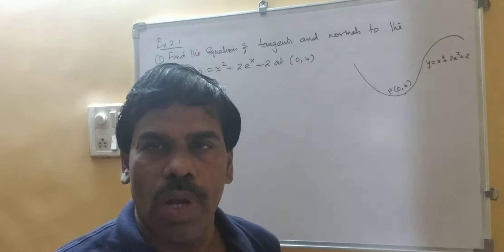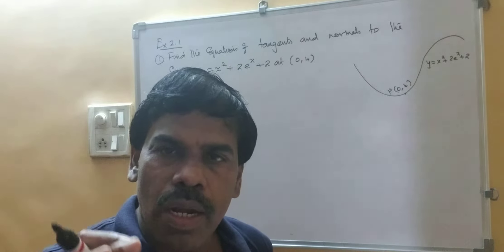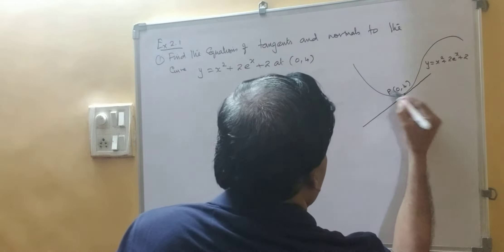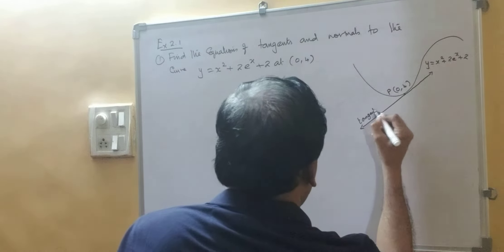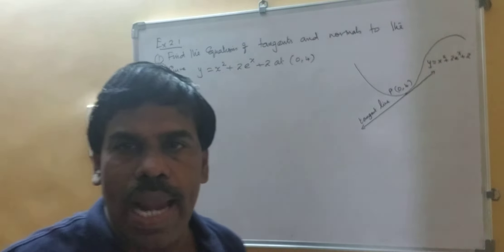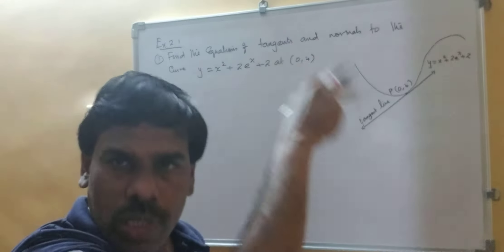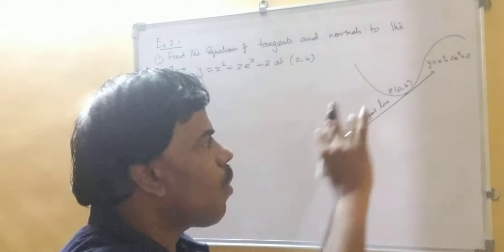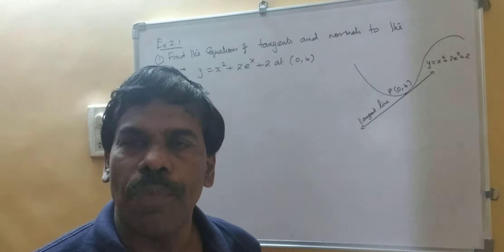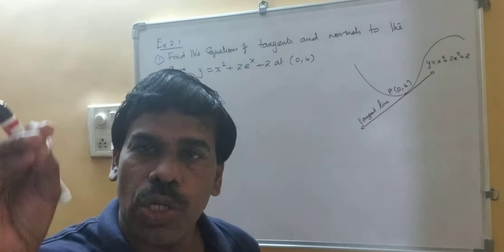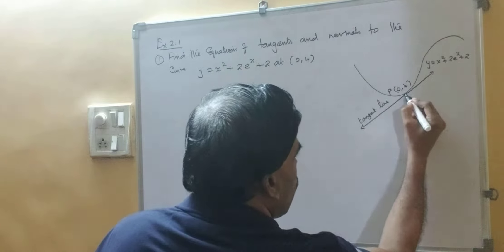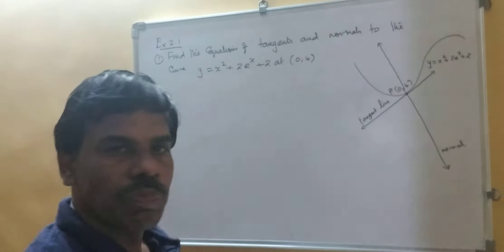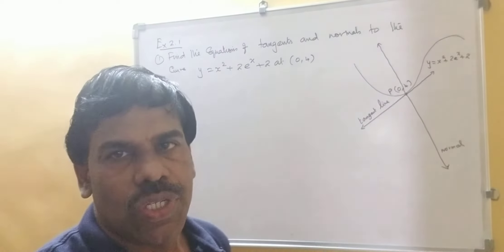What do you mean by tangent to any curve or any function? Tangent means it will touch the given geometrical figure at only one point. For example, this is point P, and this is called a tangent line. This line touches the given curve or the function at only one point, say 0 comma 4. Normal is a line which is perpendicular to the tangent at the given point. So at this point, if you draw one perpendicular, this is the normal.